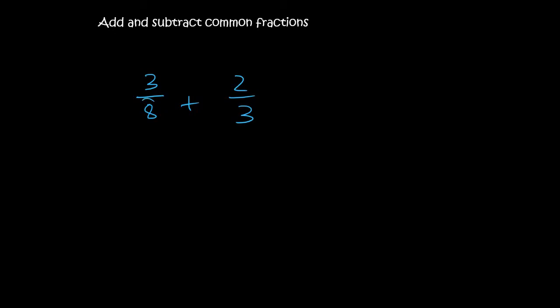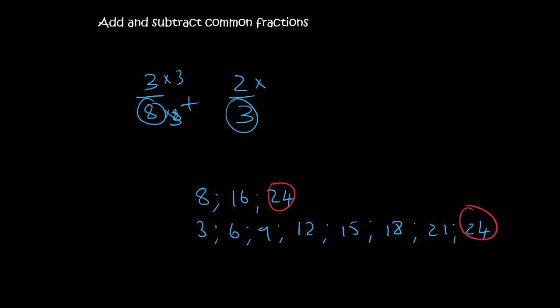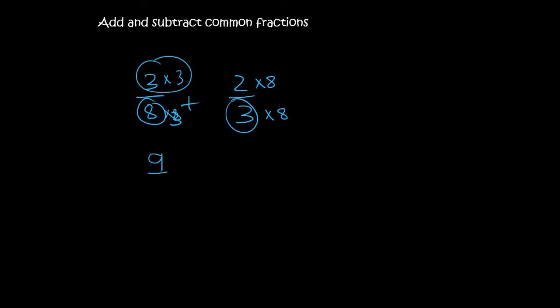3 over 8 plus 2 over 3. A common denominator between those two would be 24. Not sure about that? Count in 8s, then count in 3s, and we see that they both have the number 24. So we will need to multiply this one by 3 and multiply this one by 3. Then multiply this one by 8 and multiply this one by 8. So at the top, we'll end up with 9 over 24 plus 16 over 24. And when you add those two together, you end up with 25 over 24. Now, 24 fits into 25 once and then there's 1 24th left over.